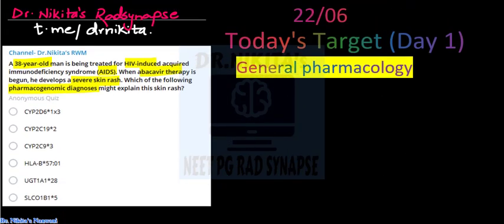So now let us go back to the question. So the question asks about when abacavir therapy is started, then there is severe skin rash. Pharmacogenomic diagnosis - we said abacavir AB, so HLA-B57, that would be the answer.